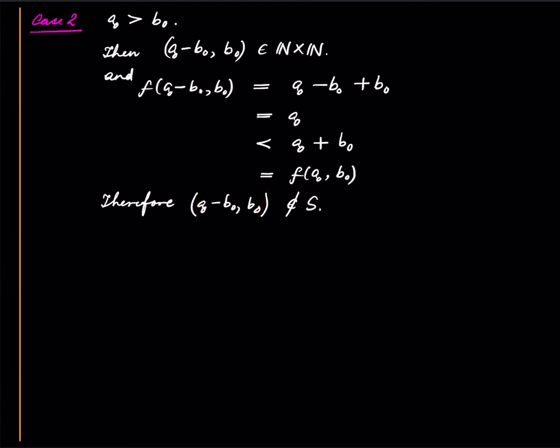Because if this were in S, then it would be an element in S which achieves a smaller image under F. But by choice of A0 comma B0, this was the thing which achieves the smallest image. And since this image is strictly smaller than the smallest possible, we have this conclusion.